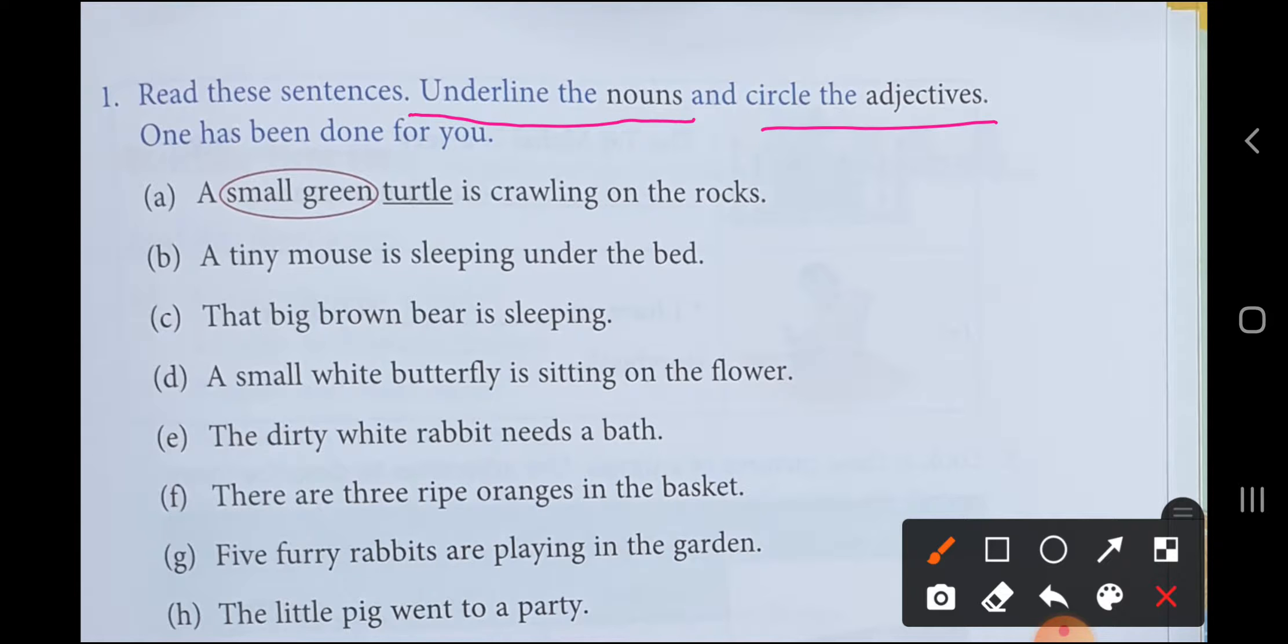First one is done for you: a small green turtle is crawling on the rocks. Now we know turtle is an animal, the turtle is a noun, we will underline it. And how is the turtle? Small, green. These are adjectives for the turtle, so we will circle it. Rock is also a noun - rock means stone, so this is also a noun.